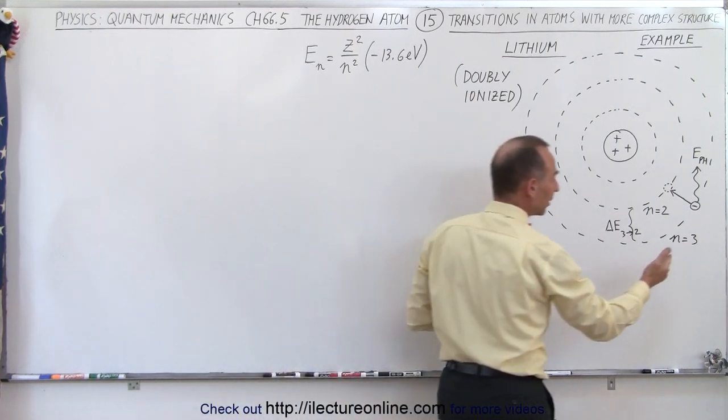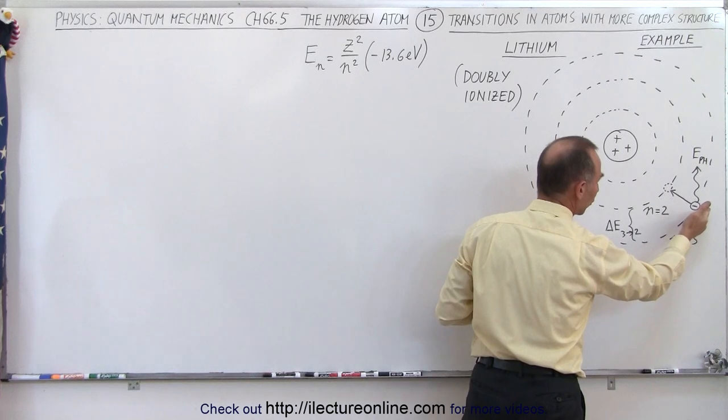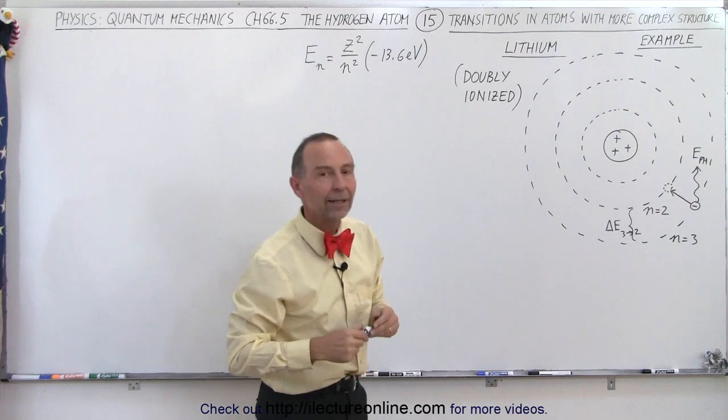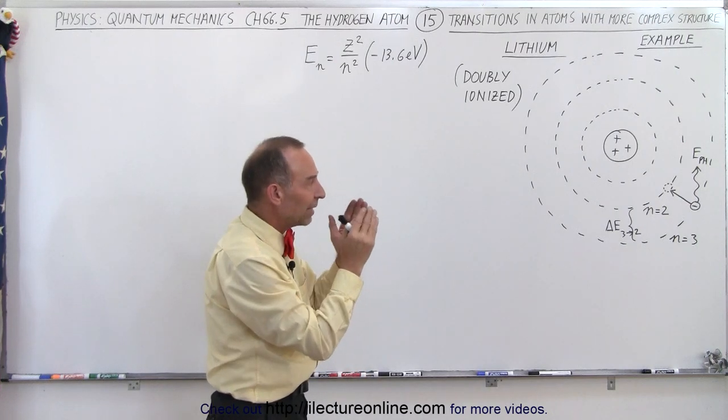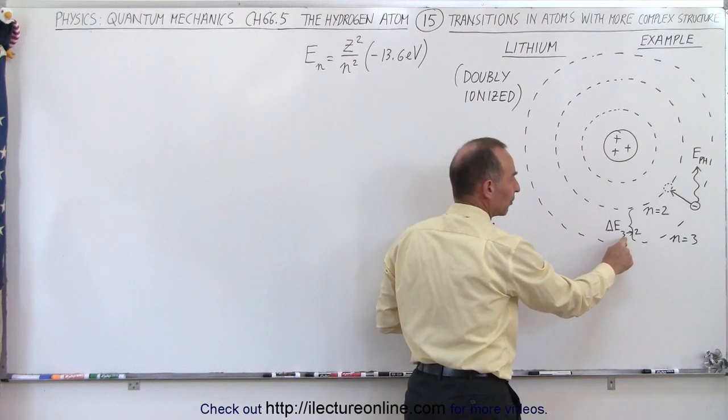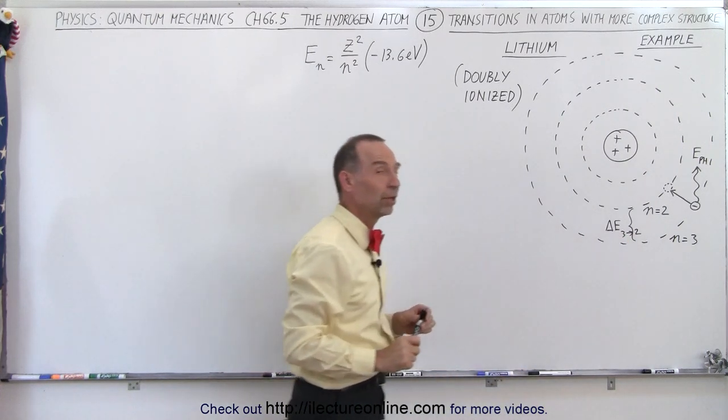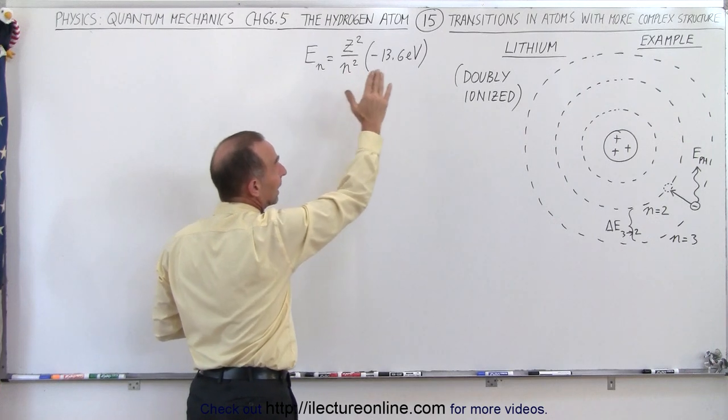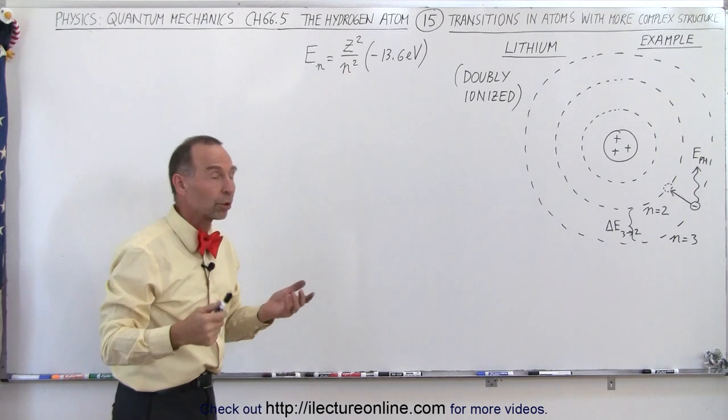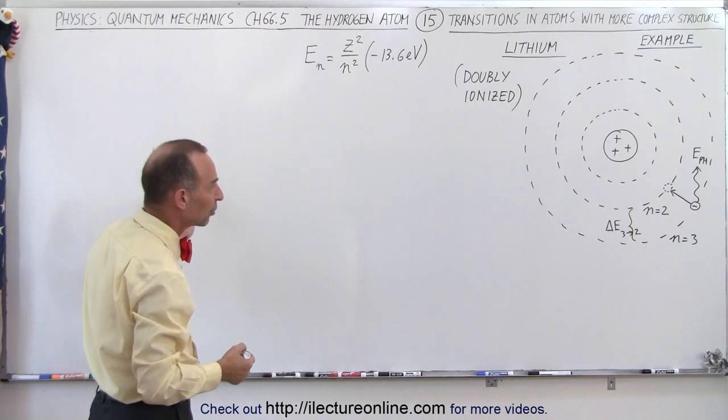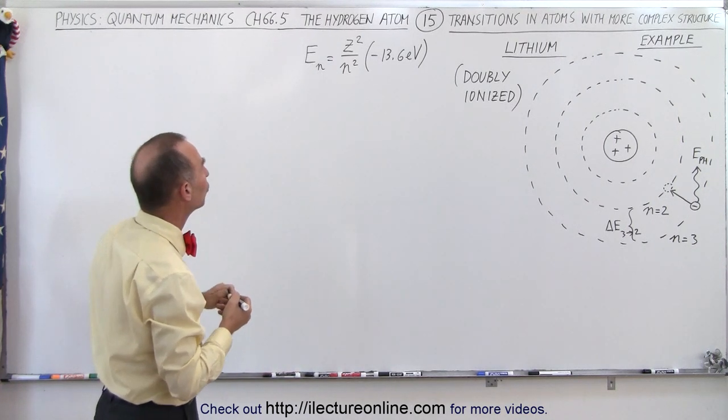So let's say we have an electron that's in the third energy level, the third orbit, and it jumps down to the second orbit, thus releasing a photon that has an energy equal to the energy difference between the two levels as we jump from the third down to the second level. So knowing that this is how we calculate the energy of the energy level in a more complex structure, a more complex atom, let's go ahead and find the energy of n equals 3 and the energy for the n equals 2 orbit.